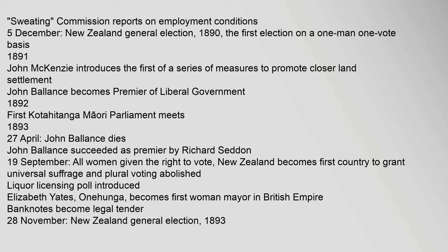1892: First Kotahitanga Maori parliament meets. 1893, 27 April: John Ballance dies. John Ballance succeeded as Premier by Richard Seddon. 19 September: All women given the right to vote — New Zealand becomes the first country to grant universal suffrage. Plural voting abolished. Liquor licensing poll introduced. Elizabeth Yates of Onehunga becomes first woman mayor in the British Empire. Banknotes become legal tender.